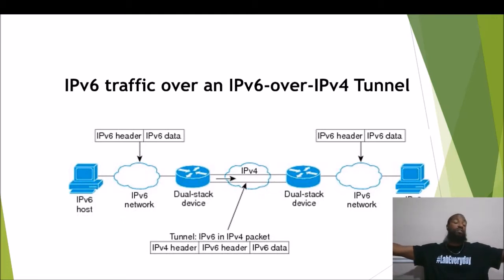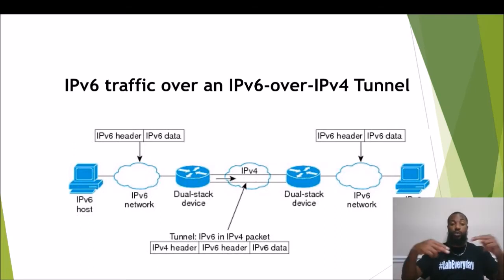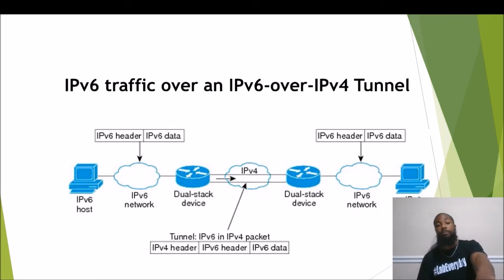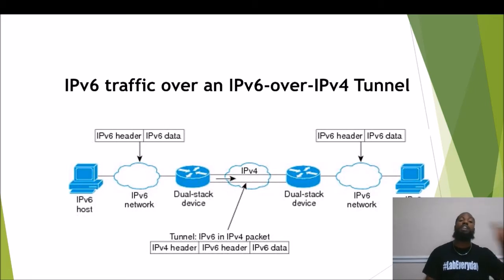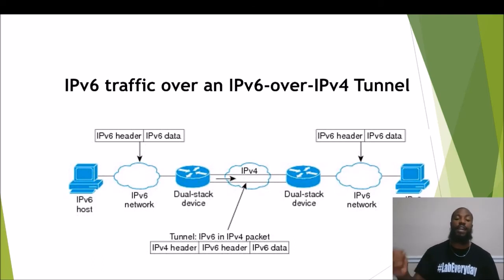For the two IPv6 networks to communicate across an IPv4 backbone, all edge devices need to be dual-stack compatible. Looking at the packet structure: you have the IPv6 header with data in the middle, but an IPv4 header is added on top. When the packet travels from one network to the other, it's encapsulated with an IPv4 header; once it reaches the destination, that IPv4 header is stripped off and the IPv6 data is delivered. That's how you get with the times.